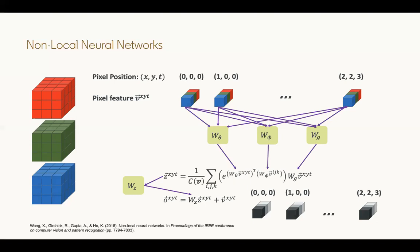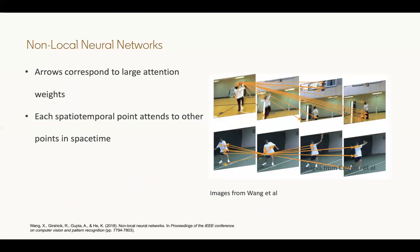Because of the skip connection, this actually enables us to plug in non-local layers to any sort of video architecture that's already there. Here are two example video clips with arrows corresponding to high attention weights. As desired in both the basketball example and the tennis example, the output representation of certain points focus on salient areas in the entire input clip.